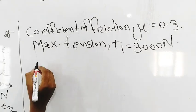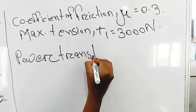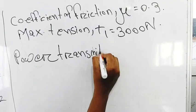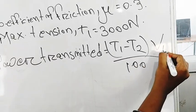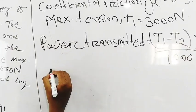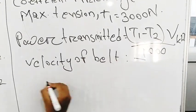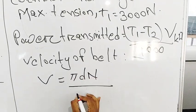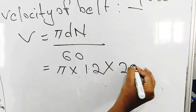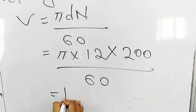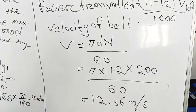Given data is complete. Then power transmitted, the formula is T1 minus T2 into V divided by 1000 kilowatt. So we have to find V. Velocity of belt is equal to V is equal to π DN divided by 60. That is π into diameter, that is 1.2, into N is equal to 200 rpm divided by 60. Then the answer will be 12.56 meter per second, velocity unit meter per second.